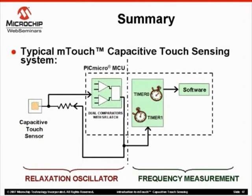The capacitive touch sensing system shown in this web seminar utilizes a relaxation oscillator circuit in which the touch sensor's capacitance is used to affect the frequency. Frequency measurement incorporates the Timer 1 and Timer 0 modules in conjunction with software. Timer 1 provides a 16-bit value based on the frequency of the oscillator, while Timer 0 interrupts provide a fixed gated period over which to read these values.